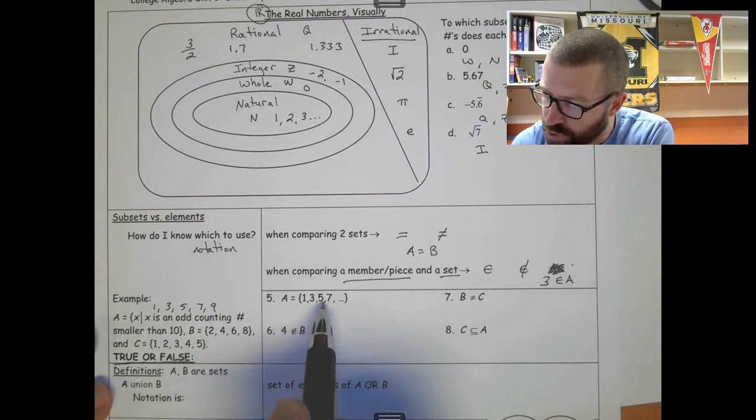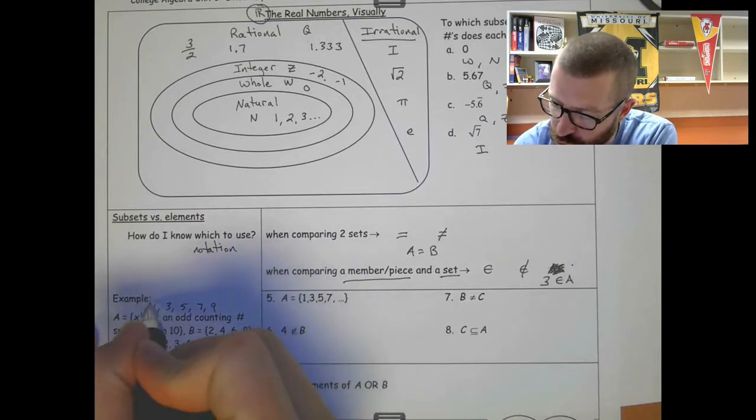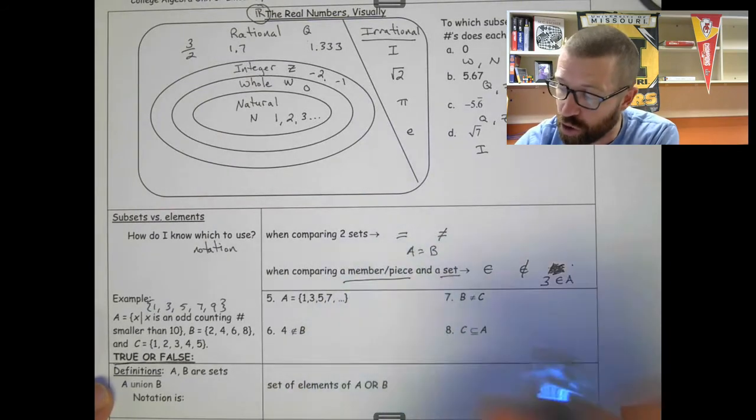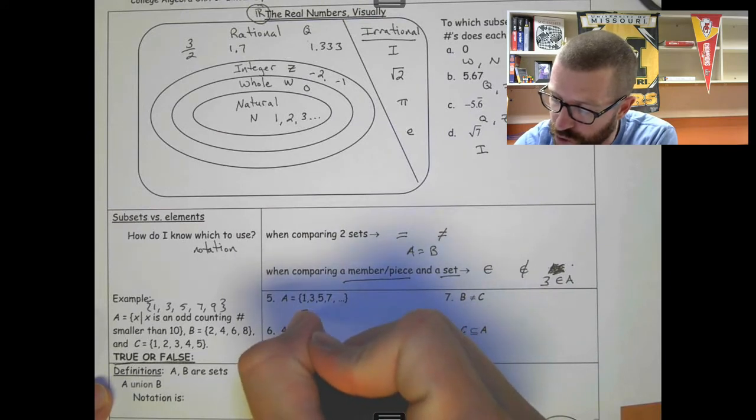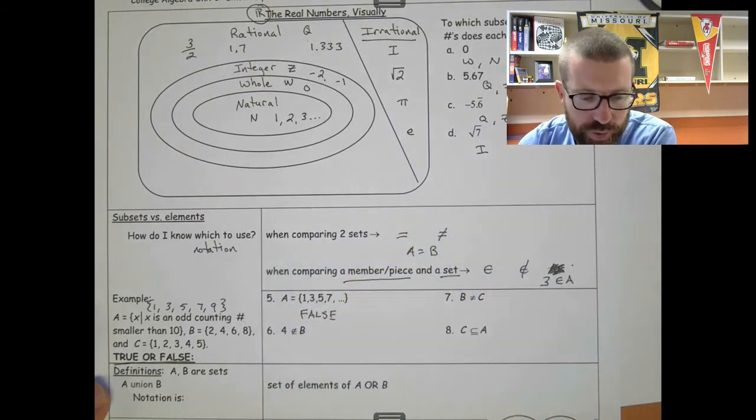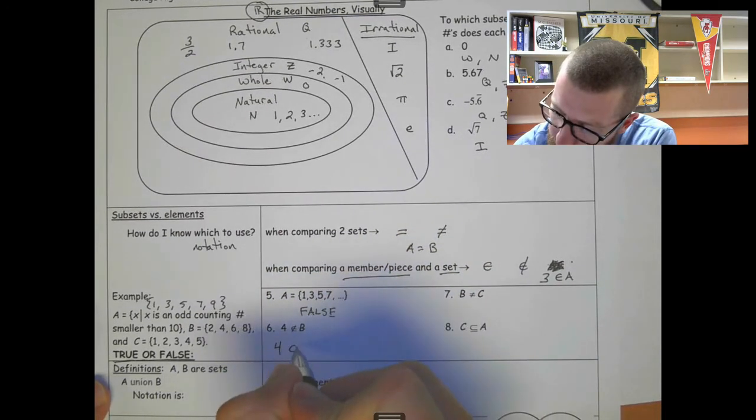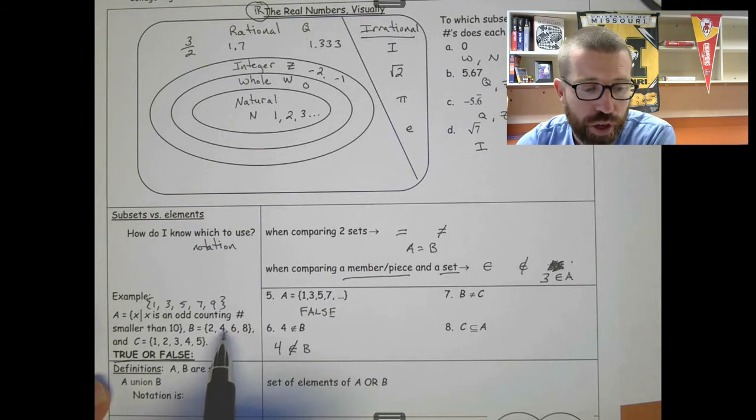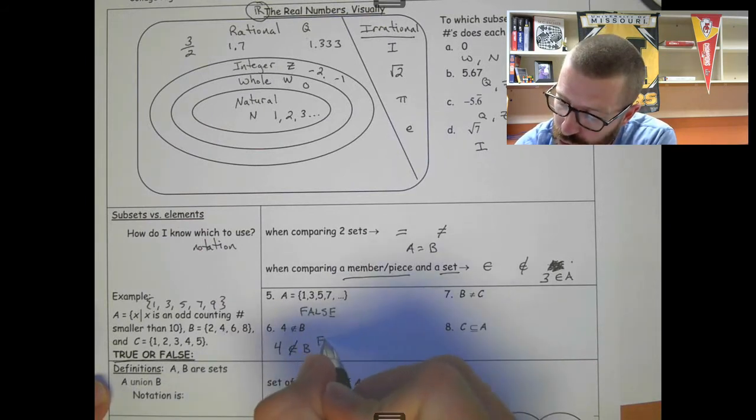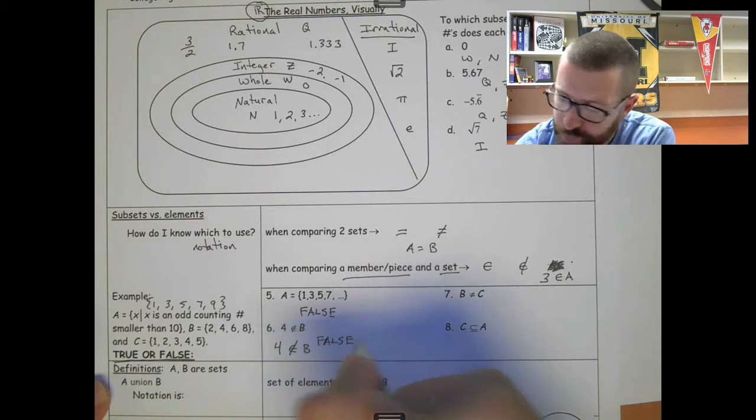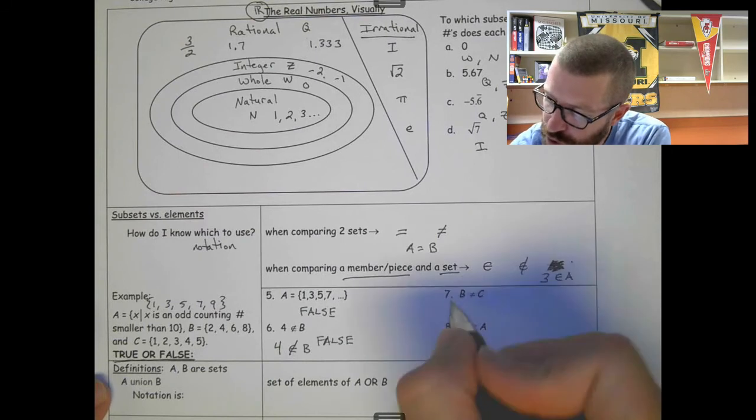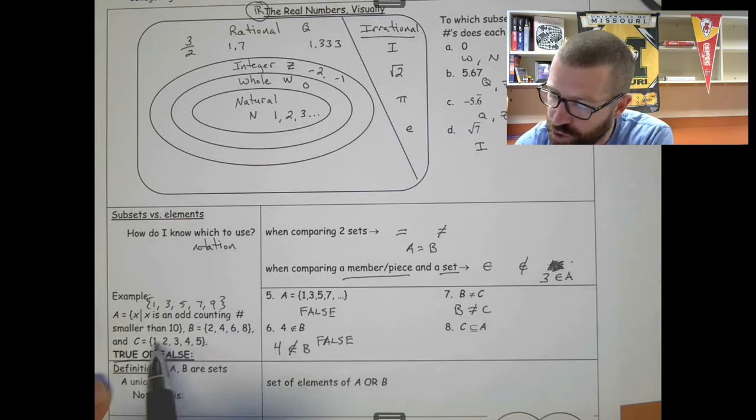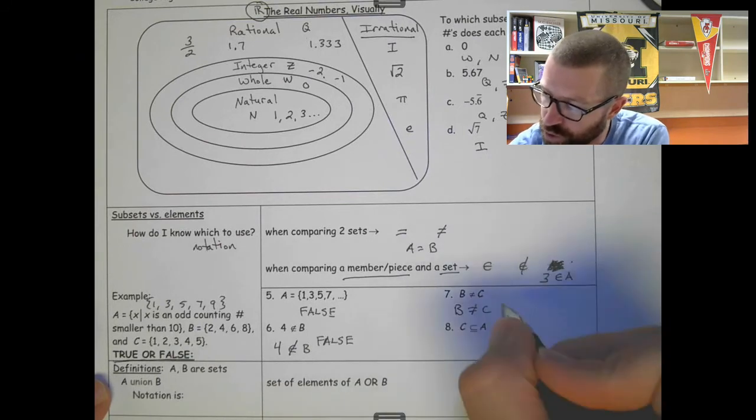And then, okay, so now we're ready. So A is 1, 3, 7, or 1, 3, 5, 7, 9. I should use my brackets there. And then going, these three dots mean they go on forever. Does it continue on? And this is false because it's got to be smaller than 10, so it will not continue on. This says 4 is not an element of B. So find B, and sure enough, there's 4. So 4 is an element of B. This is also false. This one says B is not equal to C. And that's true because they're not the exact same set. C has 1, B does not. And that's enough to say they're not equal. So this is true.